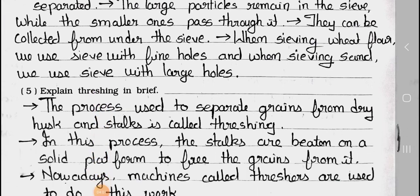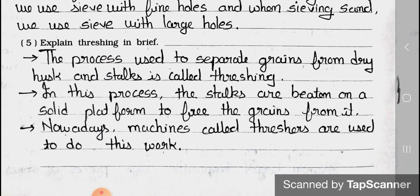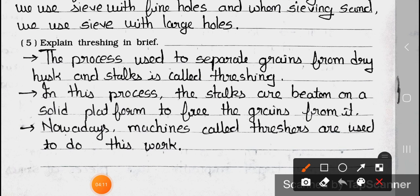Question 5: Explain threshing in brief. Answer: The process used to separate grains from dry husks and stalks is called threshing. In this process the stalks are beaten on a solid platform to free the grains from it. Nowadays, machines called threshers are used to do this work.